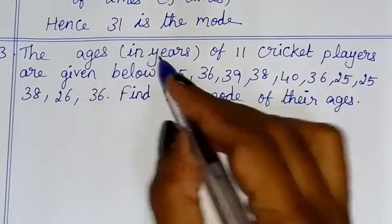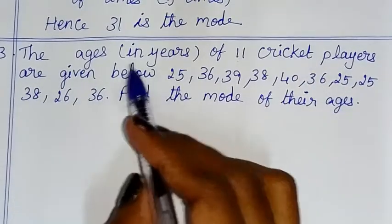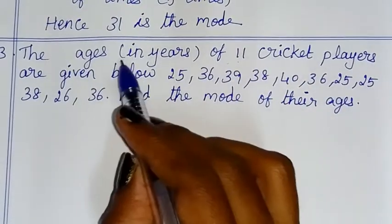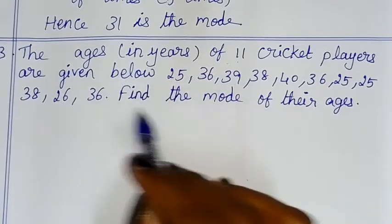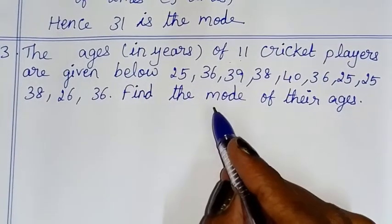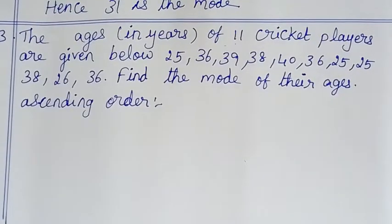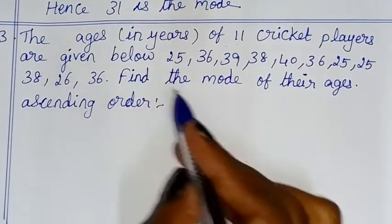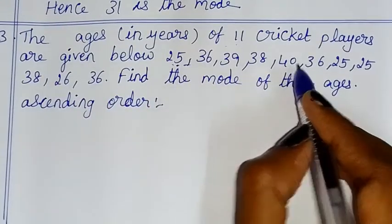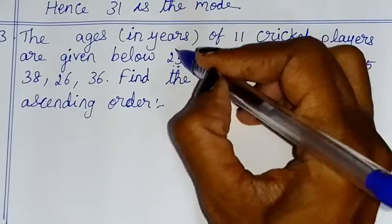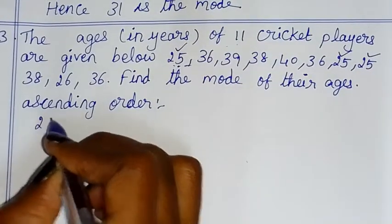The ages in years of 11 cricket players are given below. Find the mode of their ages. To find the mode, first arrange in ascending order — small to big. The smallest number is 25.